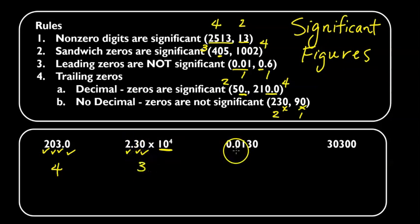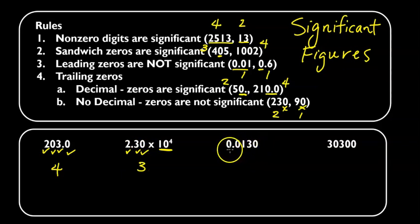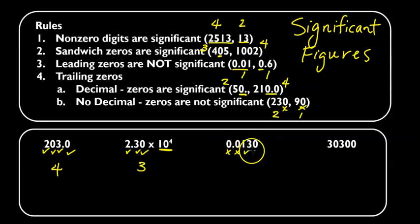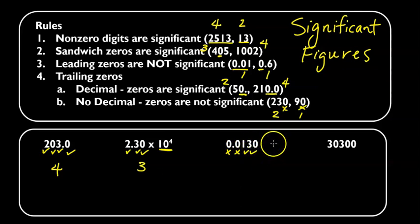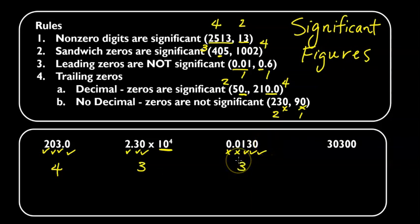The next number, 0.0130 — the leading zeros are never significant. The 1 and 3 are significant because they're non-zero. And then the last trailing zero is significant because there is a decimal, so this has three significant figures.